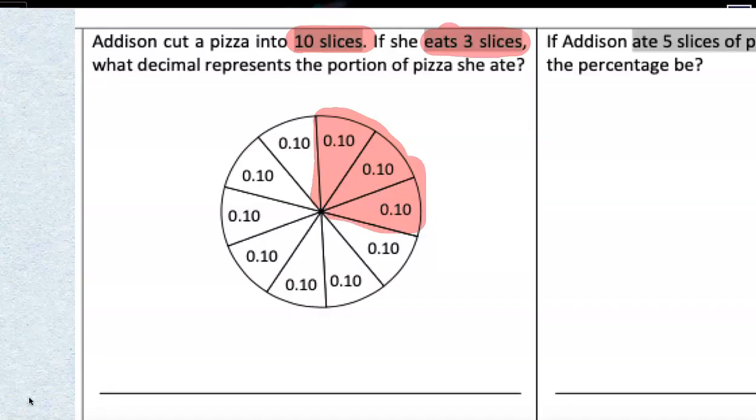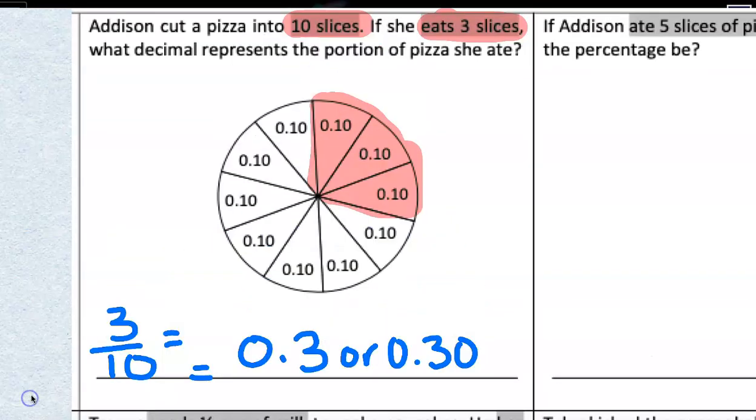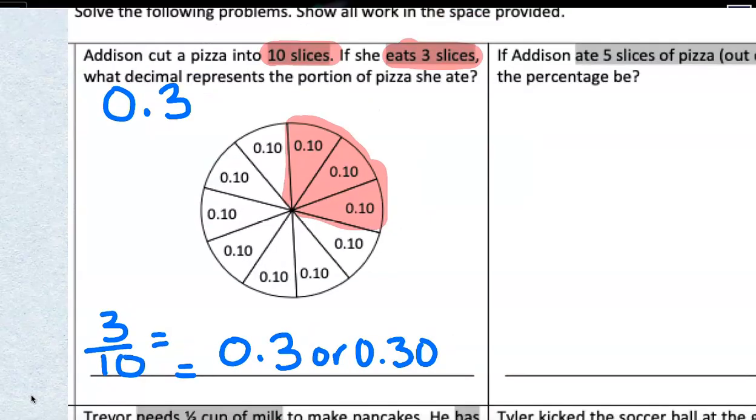So, if she eats three-tenths of the pizza, what decimal represents the portion of the pizza that she ate? We could add one-tenth plus one-tenth plus one-tenth equals three-tenths. We could write it as 0.3 or 0.30. Both of those are correct. So, let's make sure we answer the question. What decimal represents the portion of the pizza that she ate? 0.3 or three-tenths. There is a three in the tenths spot.